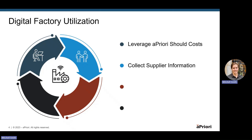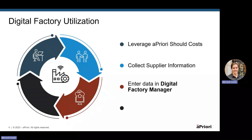Based off the data you get from those should costs, you're now confident and comfortable going to a supplier to understand what their quote is for a certain part versus the Apriori should cost, and you're just trying to understand what the gap is. Through these conversations, you're able to get and extract pieces of information from that supplier — things like material unit costs that they're assuming, the labor rate on their machines, etc. When you get those tidbits of information from your suppliers, this is where you could use the digital factory manager. So now that you have that data, you would enter it into the digital factory manager for a specific digital factory that you're trying to update. Once that data has been entered, this is now where it is globally available — one person has entered it, and now that's available for all users within that Apriori environment.